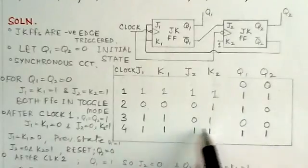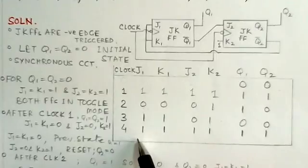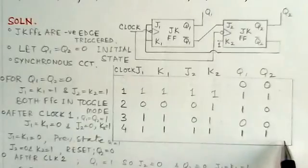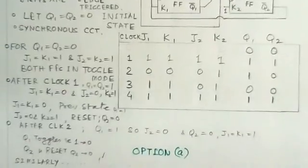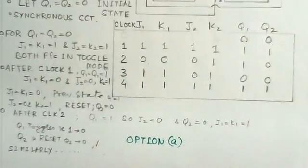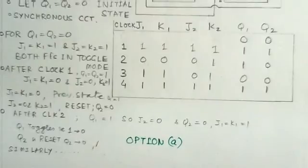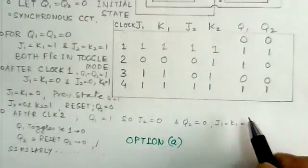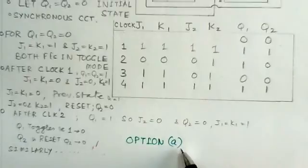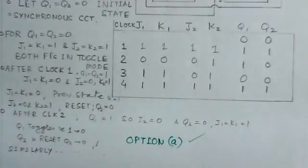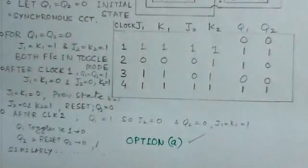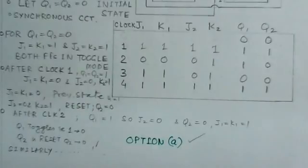Similarly, for each output state you can find the corresponding inputs and verify the sequence. After the fourth clock pulse the state returns to the initial state. Verifying the complete sequence, you would notice that option A is the correct choice for this synchronous counter.